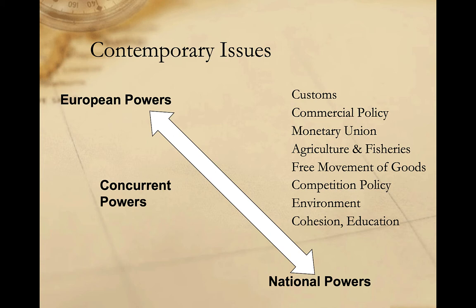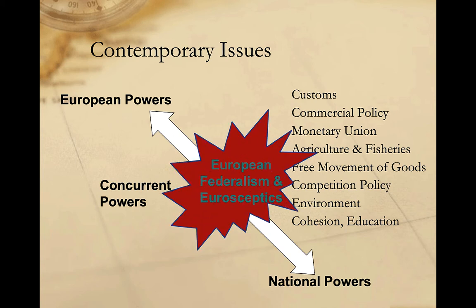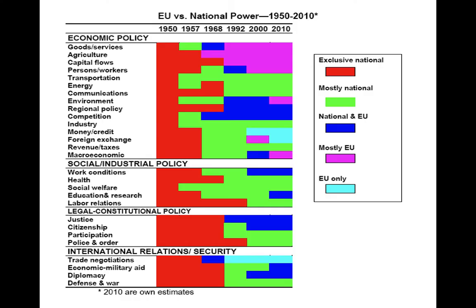However, the expansion of European power has provoked a backlash against the continued process of integration. We see this expressed in a number of ways, including the election of far-right and anti-European parliamentarians, the growth of Eurosceptic parties in the European Parliament, and even the British vote to leave the European Union. The powers of the European Union have expanded pretty dramatically over time, from the 1950s where powers were reserved for national governments, to now where the EU increasingly influences, defines, or limits national authority in economic policy, social industrial policy, legal policy, and international relations.